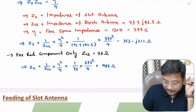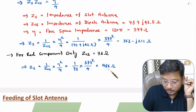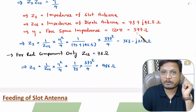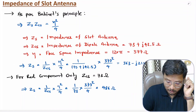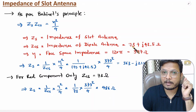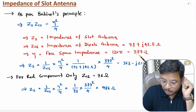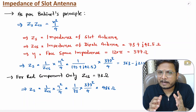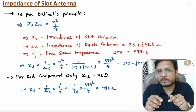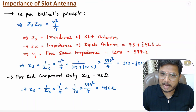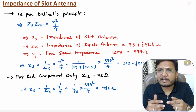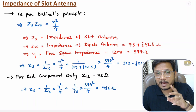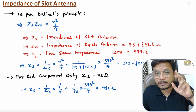Impedance of slot antenna (real value) is 486 ohms. Free space impedance is 377 ohms. Dipole antenna impedance is 73 ohms. Clearly, slot antenna impedance is nearer to 377 ohms, so slot antenna has better impedance matching with free space compared to dipole antenna. That is why slot antenna radiates higher power than dipole antenna.